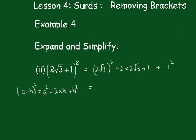Now, 2√3 all squared is 2√3 times 2√3 plus, this will be 4√3 and 1 squared is 1.